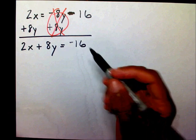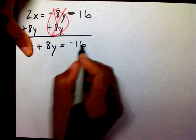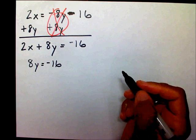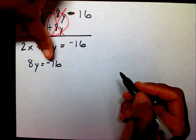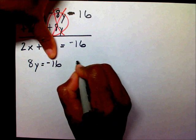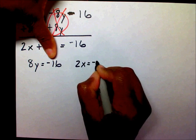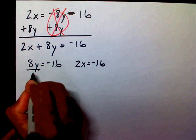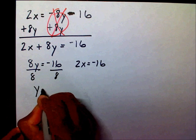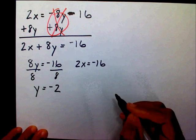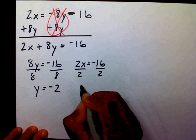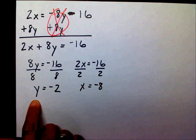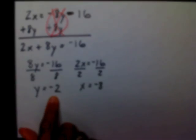Now that I have my constant isolated on the side by itself, I can cover up my first term. That's going to leave me with 8y equals negative 16. Now I'm going to cover up my second term, which will leave me with 2x equals negative 16. I can solve both equations: y equals negative 2, and x equals negative 8. Therefore, my y-intercept is negative 2 and my x-intercept is negative 8.